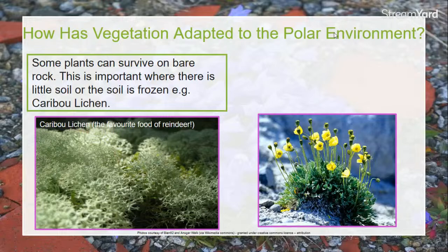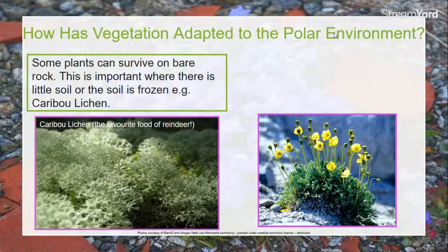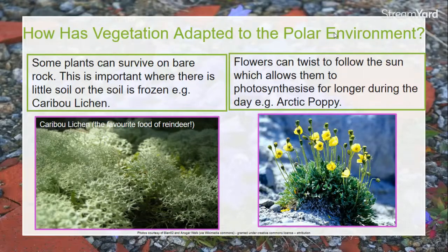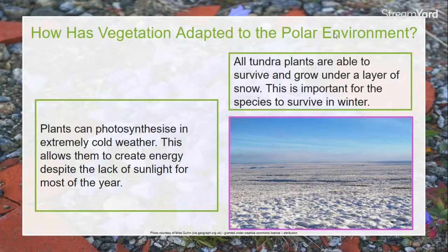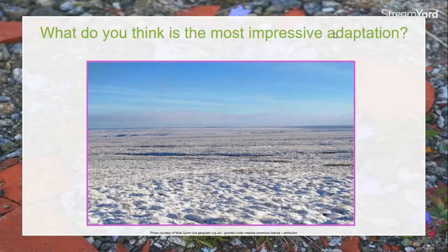Lichen — this is caribou lichen — is an example of a plant that can survive on bare rock, living where there's very little soil or the soil is frozen. This is what reindeer like to eat; real reindeer really tend to eat lichen. It's only Father Christmas's reindeer that eat carrots — but lichen is a favourite food of the reindeer. The Arctic poppy is an example where you can find videos of how the flowers twist to follow the sun. And as I said, all tundra plants can survive under thick layers of snow and can photosynthesize even in really extreme weather.